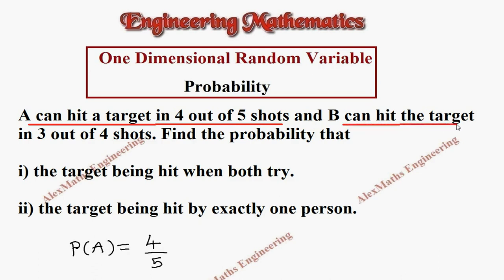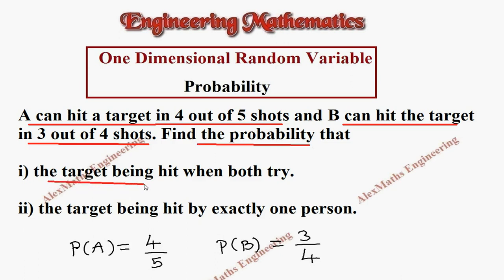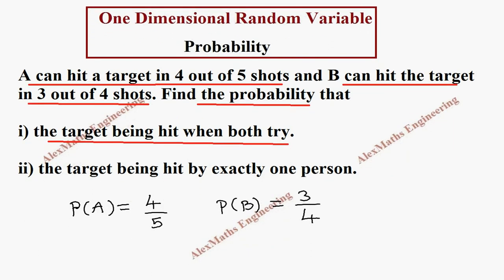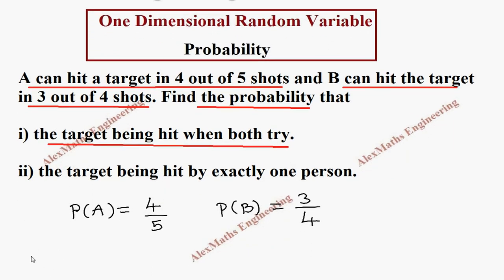In the same way, B can hit the target in three out of four shots, which means P(B) is three by four. Now we have to find the probability of the target being hit when both try. The target will be hit if any one or both hit the target.